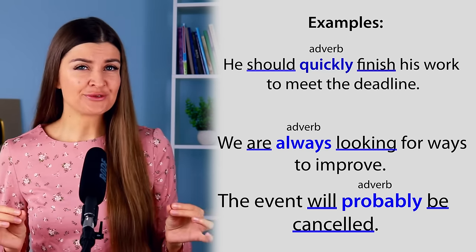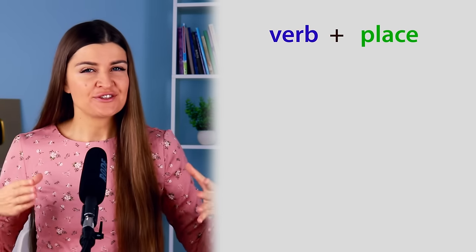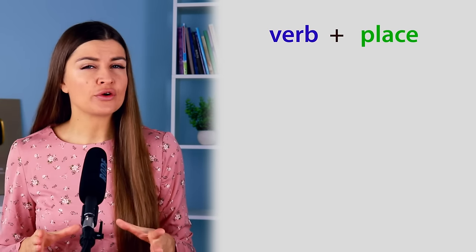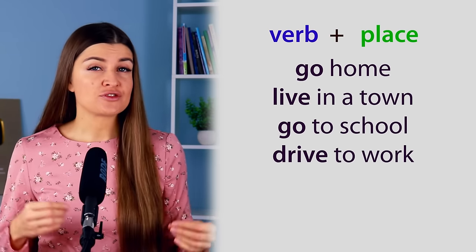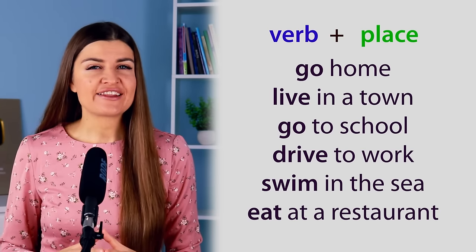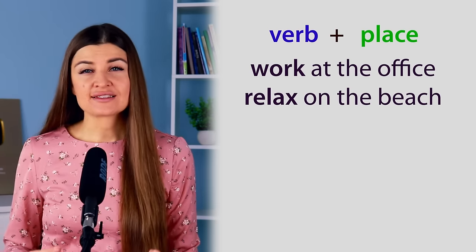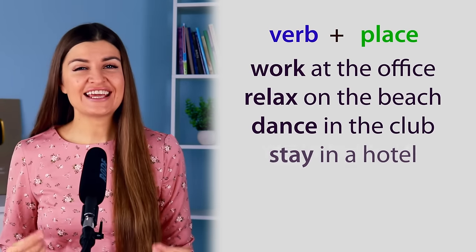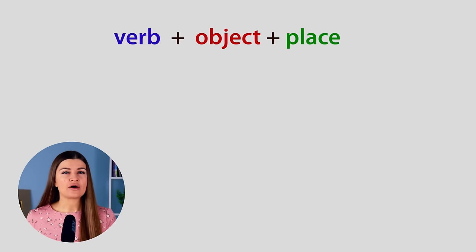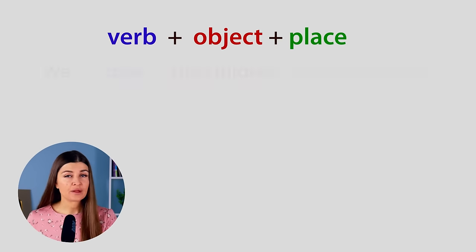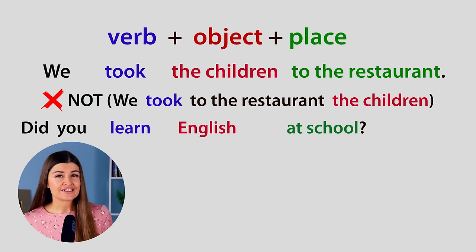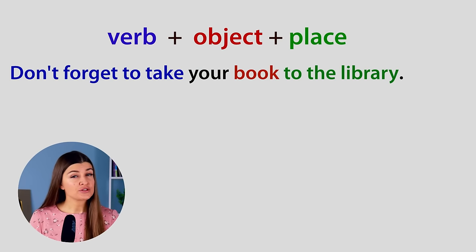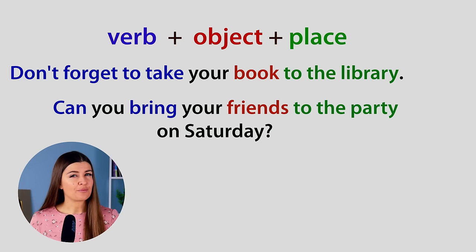Now let's discuss the important rules we need to know to construct sentences in English. In English sentences, a verb and place usually go together — we do not put other words between them. For example: go home, live in a town, go to school, drive to work, swim in the sea, eat at a restaurant, work at the office, relax on the beach, dance in the club, stay in a hotel. If the verb has an object, the order is verb, object, place. We took the children to the restaurant — not 'took to the restaurant the children'; this is not correct. Did you learn English at school? Don't forget to take your book to the library. Can you bring your friends to the party on Saturday?